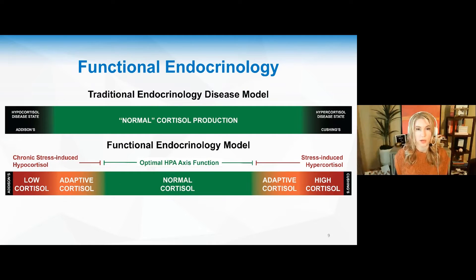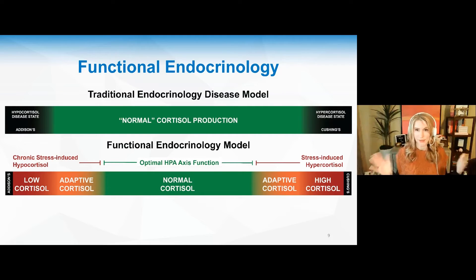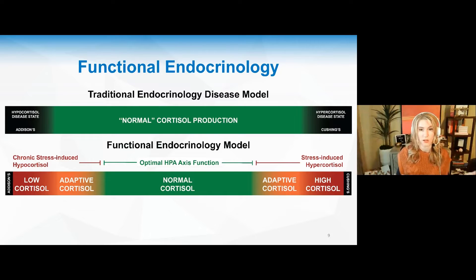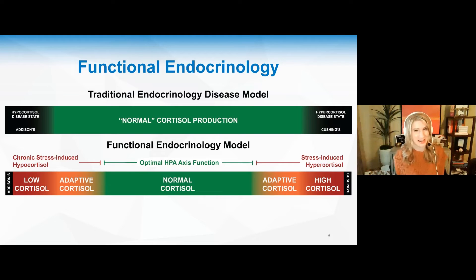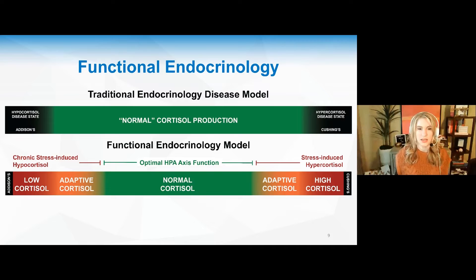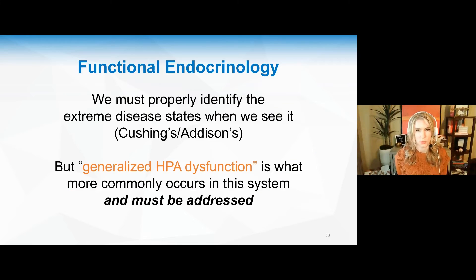In our functional endocrinology model, there's actually a lot of gray area — I color it red and orange rather than gray. So yes, you can have Addison's and Cushing's, but you can move into an adaptive cortisol state on either end. You can have low cortisol that isn't Addison's, and high cortisol that isn't Cushing's. Recognizing this can be really helpful for your patients and clients.